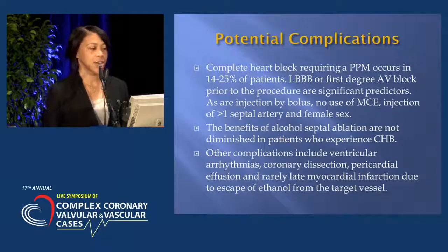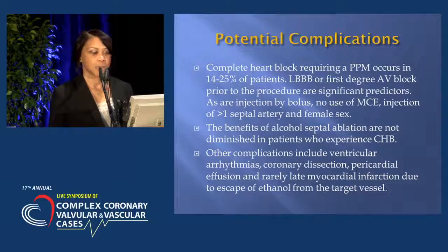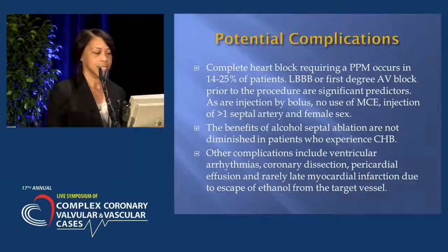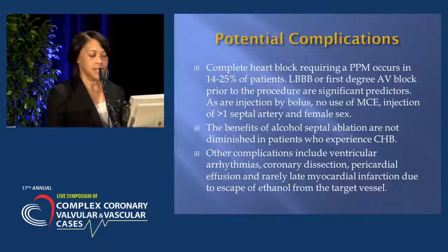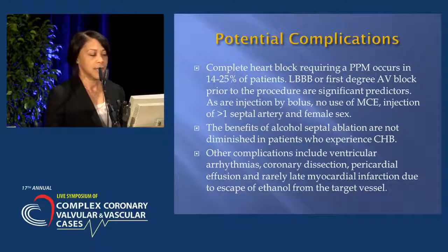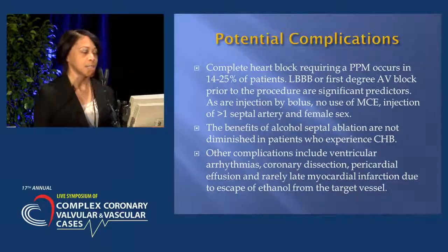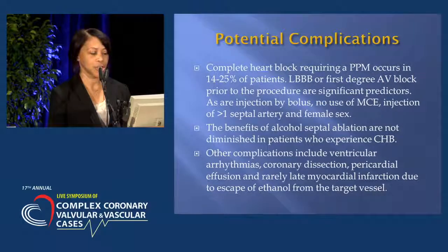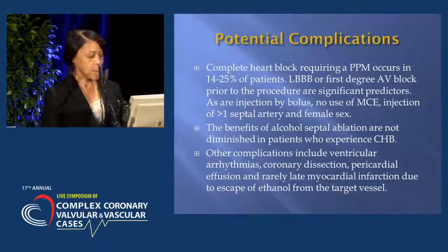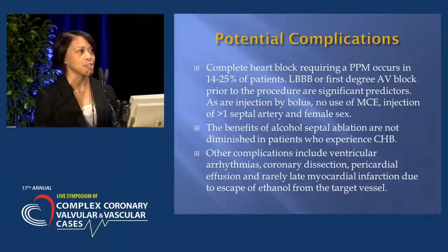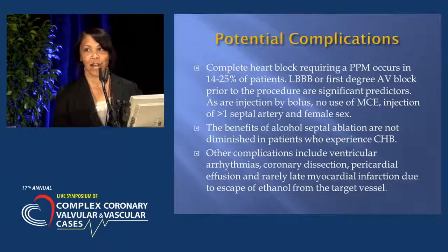Potential complications include complete heart block requiring a pacemaker, which occurs in about 14 to 25% of patients. A left bundle branch block or first-degree AV block prior to the procedure are significant predictors. The benefits of alcohol septal ablation are not diminished in patients who experience complete heart block — they still receive benefit from the procedure. Other complications include ventricular arrhythmias, coronary dissection, pericardial effusion, and rarely late MI due to escape of ethanol from the target vessel. Here at Mount Sinai, due to extreme care in patient selection and adherence to strict protocol, over the past three years we have had a zero complication rate.